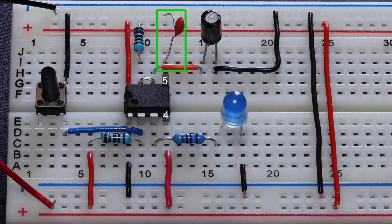So in this case you can see I have that 0.01 microfarad ceramic capacitor going from pin 5 directly to the ground rail on the breadboard.